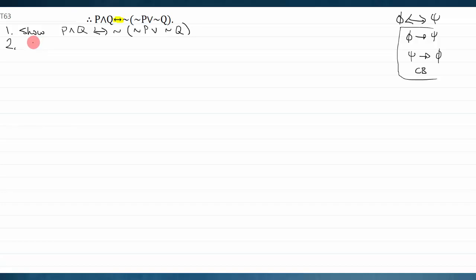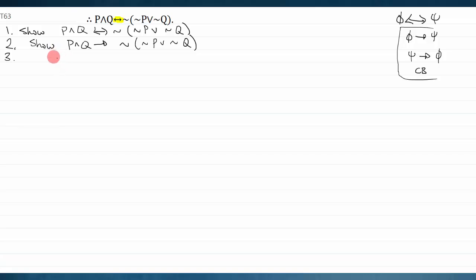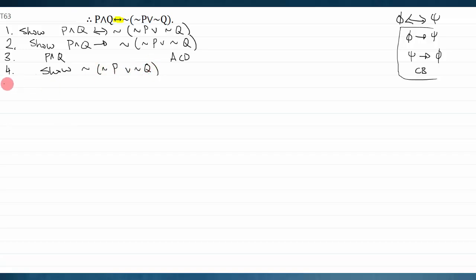My most recent show line is a conditional, so I start a conditional derivation and assume the antecedent p and q. I want to show the consequent 'not (not-p or not-q).' Since I don't recognize a pattern for showing a negation directly, I immediately start an assume ID, which lets me assume 'not-p or not-q.' Suddenly out of nothing I've generated two available lines to work with, and premise three simplifies: p and q simplifies to p and also to q — automatic moves using and-elimination.